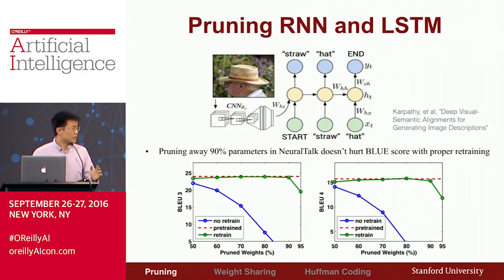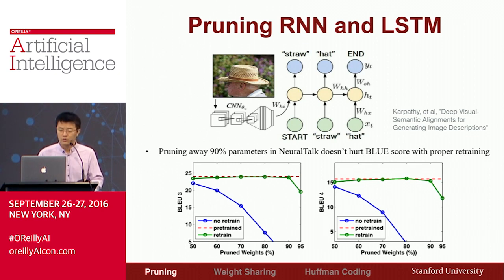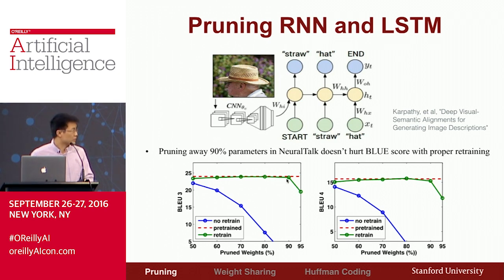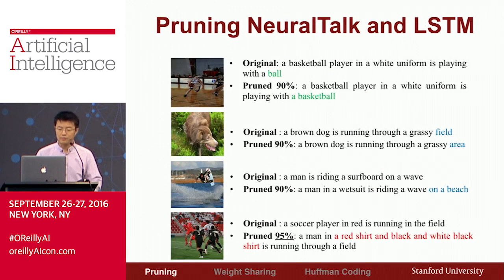Neural network pruning also works very well for RNNs and LSTMs, used in natural language processing and speech recognition. We experimented with NeuralTalk — given an image, it outputs a description. The evaluation is based on the BLEU score. We can safely prune away 90% of the parameters without hurting the BLEU score, both BLEU-3 and BLEU-4.